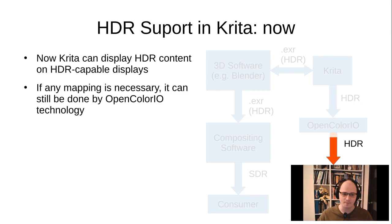The final color grade step was usually done in compositing software. With the appearance of HDR displays, the situation has changed. Now Krita should not only prepare assets for an HDR-based pipeline, but it should also create HDR content that is the final result itself. This was implemented in Krita in 2019, so now the user can see the HDR image directly on screen and paint on it.